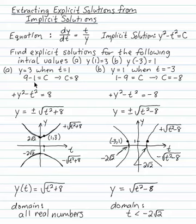If y is 3 when t is 1, I can insert those values. 3 squared minus 1 squared is c, so c must be 8. Positive y squared minus t squared is 8.